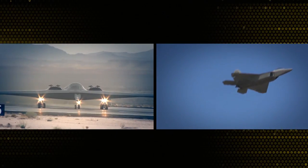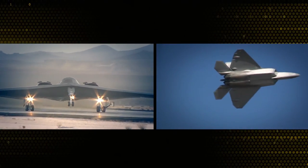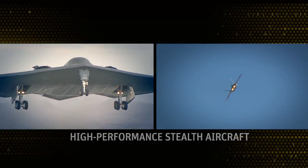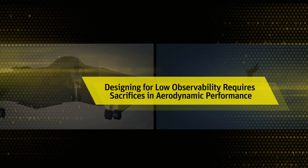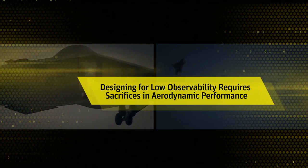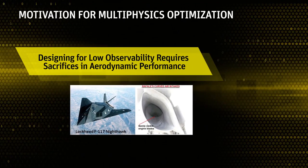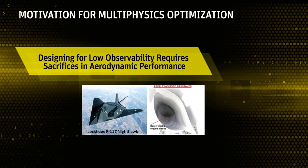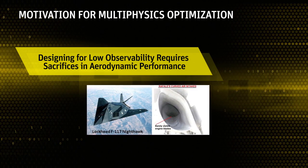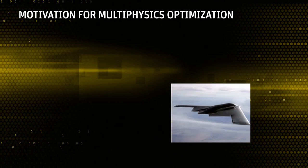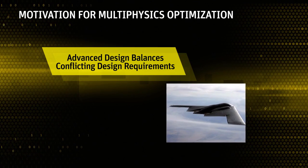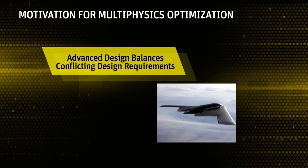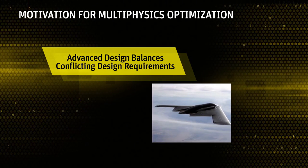Modern strategies for military engagement create a strong need for high-performance stealth aircraft. But designing for low observability requires sacrifices in aerodynamic performance and vice versa. For example, the Lockheed F-117 requires sophisticated active controls to maintain flight stability and maneuverability. The best airframe designs successfully balance the conflicting requirements to maximize speed and maneuverability while minimizing the aircraft's radar signature.